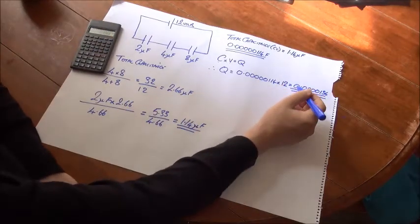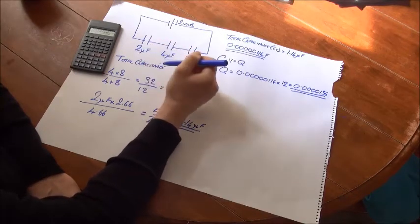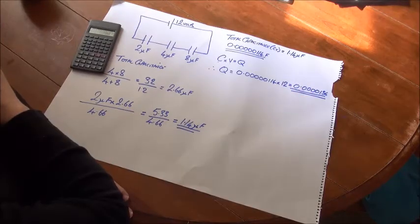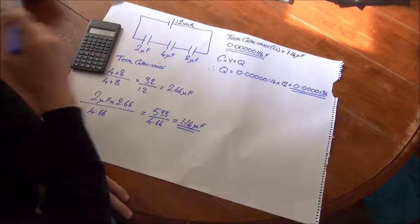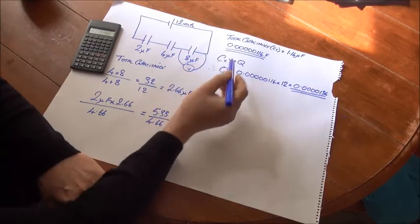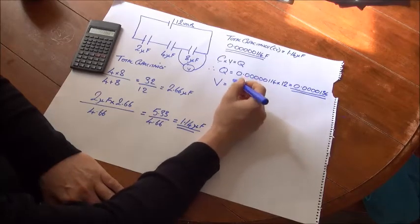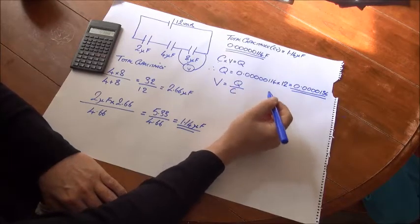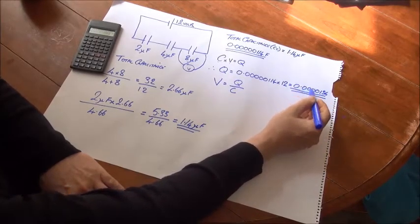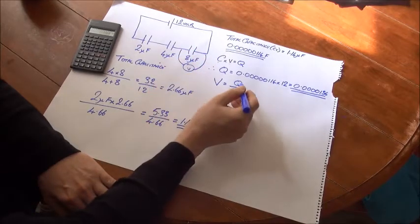In a series circuit, Q is a constant. The charge Q is applied equally across all three capacitors. Therefore, the two microfarad, four microfarad, and eight microfarad capacitors all have a charge of 13.6 microcoulombs applied to them. The thing that changes in a series circuit of capacitors is the volt drop across each capacitor. We can rearrange C times V is equal to Q to make V the subject. V is equal to Q divided by C. We know that Q is a constant, so for each sum, Q will not change. And all we have to do to find the volt drop across each capacitor is divide the value of each capacitor into Q.